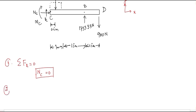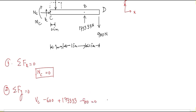Applying the second condition of equilibrium — summation of all forces in the y-direction equals zero, taking upward as positive. Vc is upward, so positive. The 600 N force is downward, so negative. The 1733.33 N force is upward, so positive. The 900 N force is downward, so negative. Solving this equation gives Vc = −233 N. The negative sign indicates the assumed direction must be reversed.